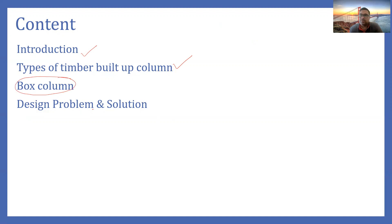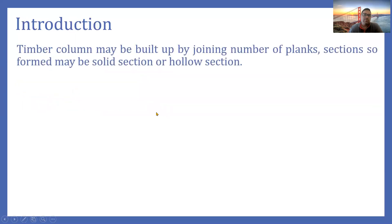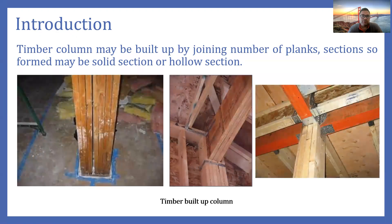We will take an example to understand this problem. Built-up sections can be in the form of a built-up beam or a built-up column. Built-up sections are those sections which are composed of two or more sections of the same material. Therefore, built-up columns are those columns which are composed of two or more sections of the same timber.